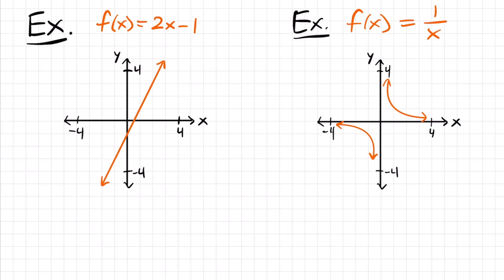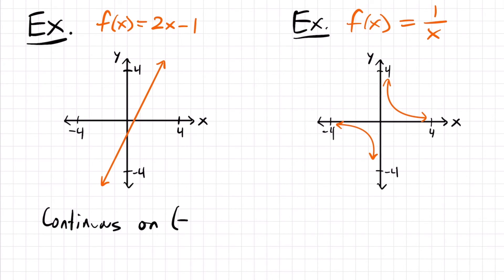Let's look at some examples to see if functions are continuous, and if not, what kind of discontinuities they have. Starting with f(x) = 2x - 1: no matter what value of x we plug in, we won't get an undefined value. As you can see from the graph, it keeps going forever with no holes, no gaps, no interruptions of any kind. So this function is everywhere continuous and has no discontinuities — it's continuous on the interval negative infinity to infinity.